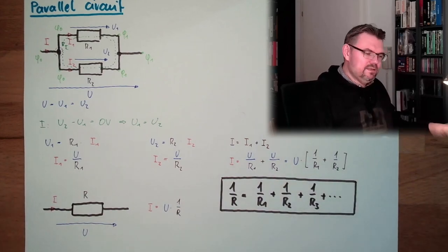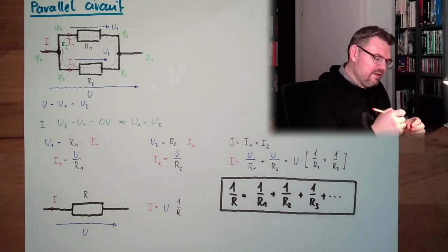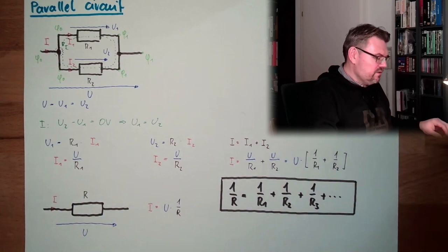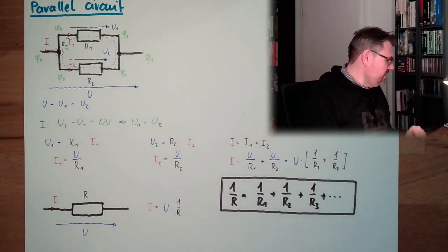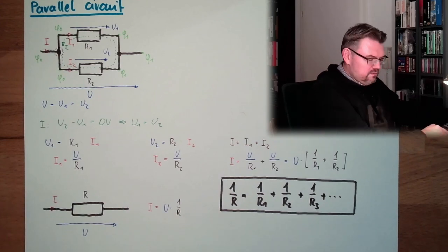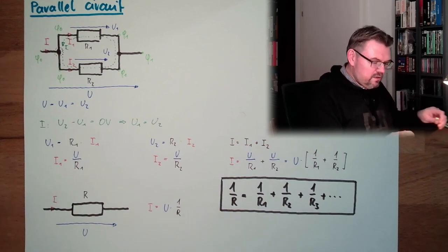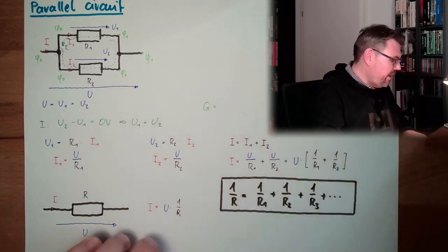We talked about the fact that there's not only resistance, there's also conductance. We called it G. We said the conductance G was 1 divided by R.